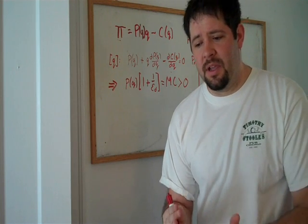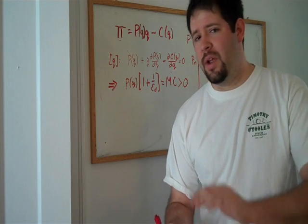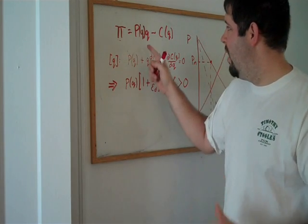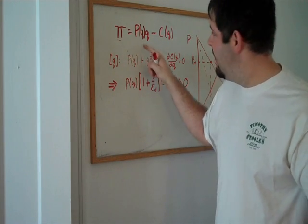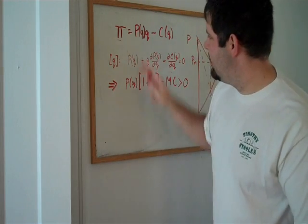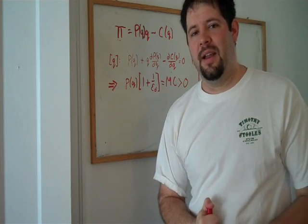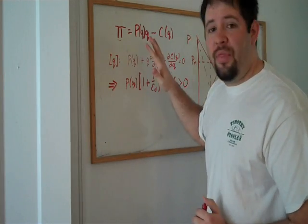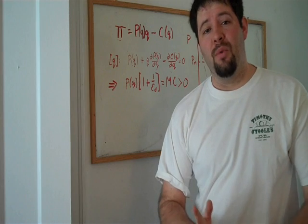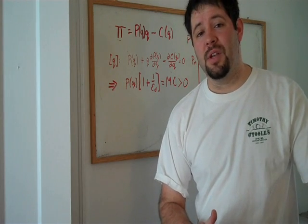Now, if you think about what that does to revenue, price goes up by one percent, quantity goes down by less than one percent, revenue will go up because that one percent price increase more than offsets the decline in the quantity. So, that's a spot on the demand curve where revenue goes up as the price goes up.